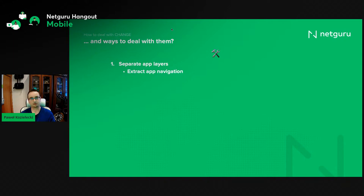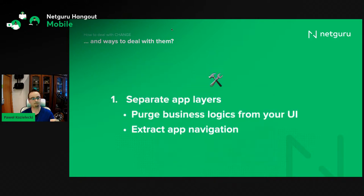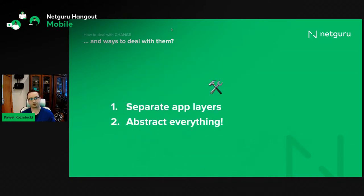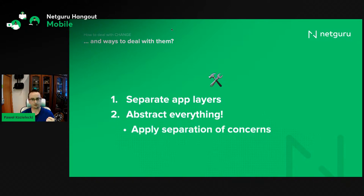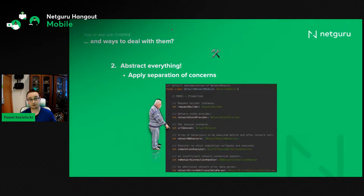Our goal is to make sure that rigid navigation never prevents us from implementing a new cool feature. Moving on, the next very important thing I would consider is introducing a little bit of abstraction in the application. The first thing to do is introduce good old separation of concerns. Let me present this little networking module, which is responsible for executing networking requests. It has helpers: one to build requests, one to provide networking state information, a session, and a set of behaviors executed before and after each request.